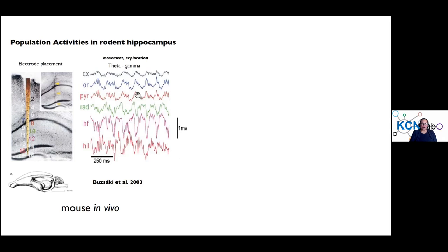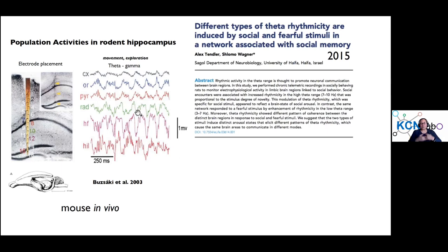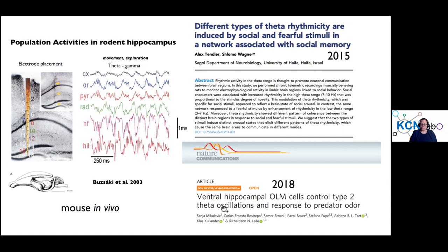We have this ongoing theta oscillation, and what you see is higher frequency gamma activity during movement exploration. When we talk about theta rhythms, it's not just some generic theta rhythm — there are different types, in particular high and low frequency ranges induced by different types of stimuli, whether social or fearful. The lower frequency theta range is 3 to 7 hertz versus 7 to 10 hertz, referred to as type 2 and type 1 respectively. Some studies have shown that certain cell types could be causal for a type 2 theta oscillation.